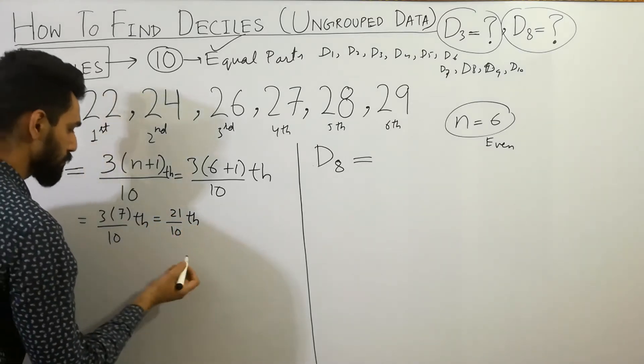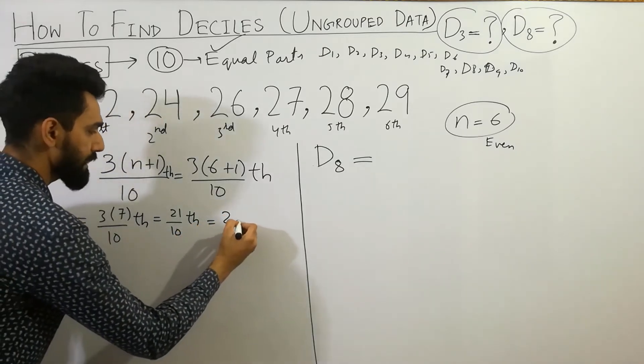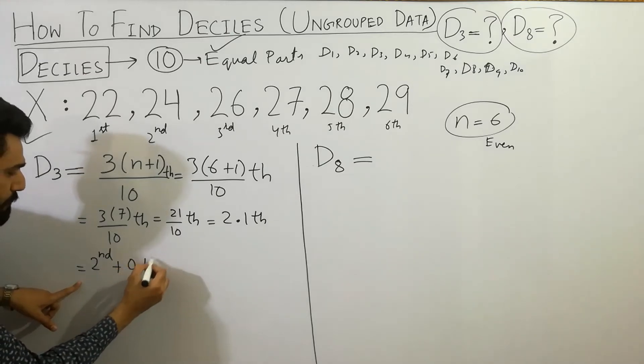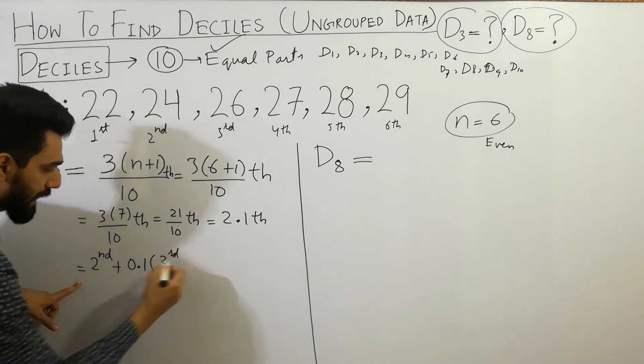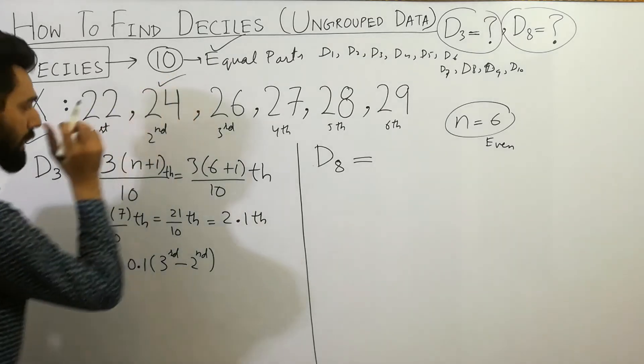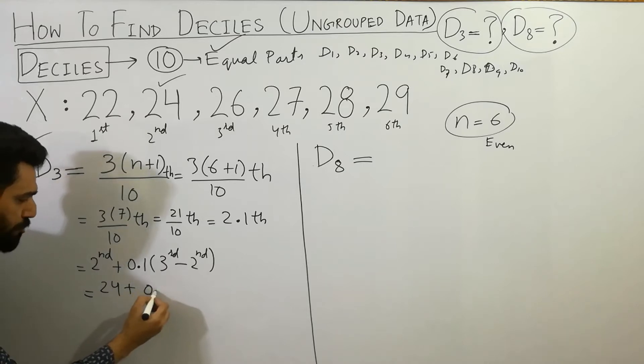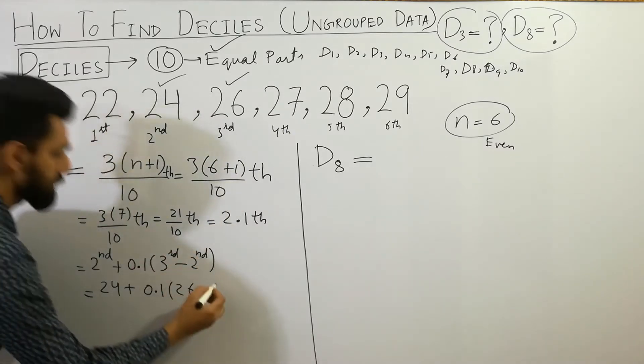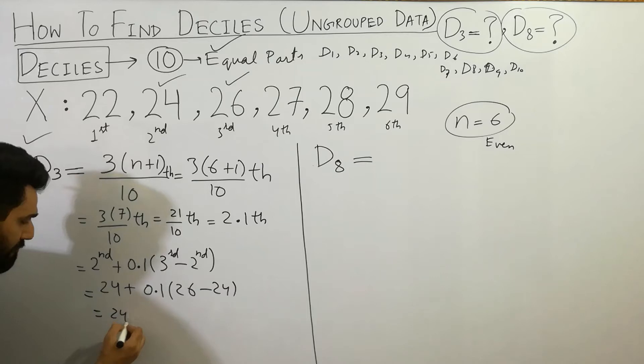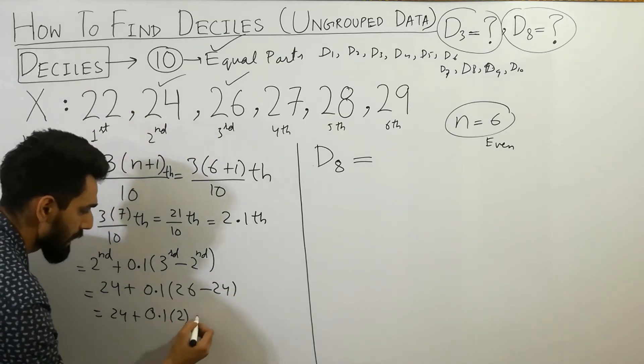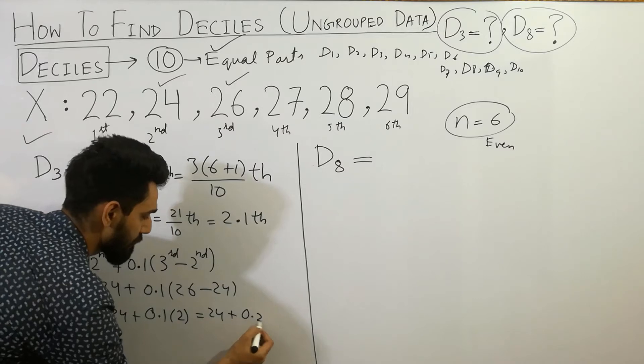Now you can write here second term plus 0.1 bracket third term minus second term. Second term is here 24, I will write here 24 plus 0.1 bracket third term is 26, 26 minus second term is here 24. We will get here 24 plus 0.1 bracket 26 minus 24 will be 2, so 24 plus 0.2.